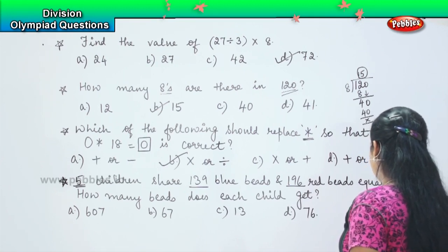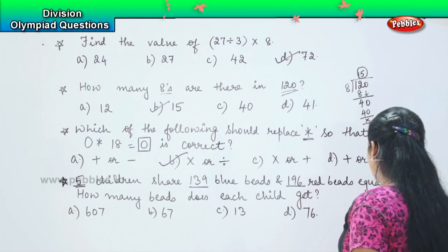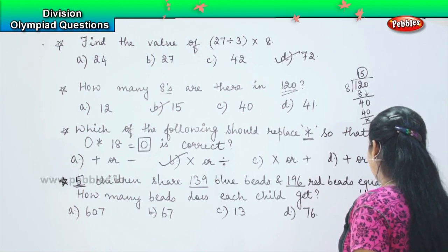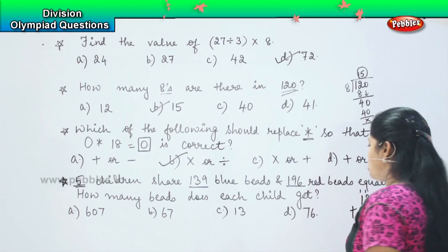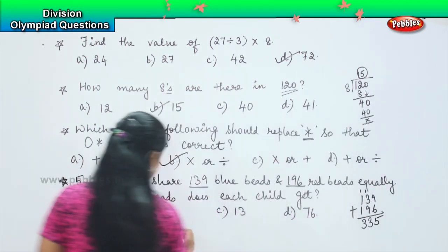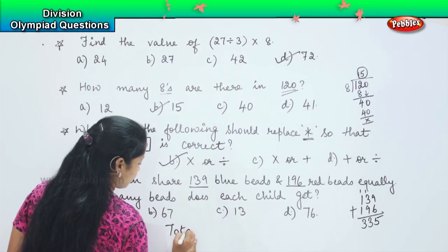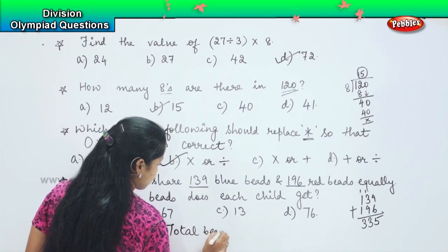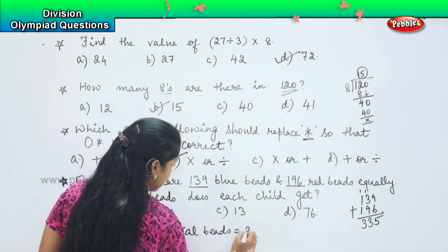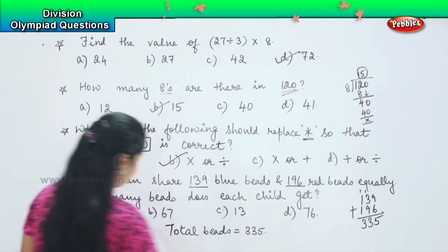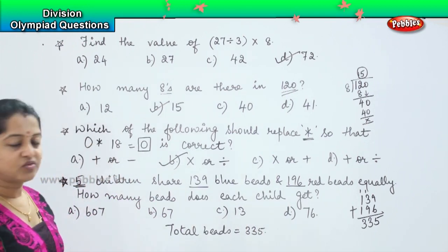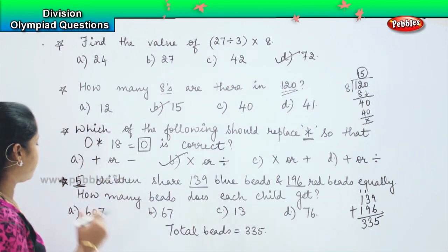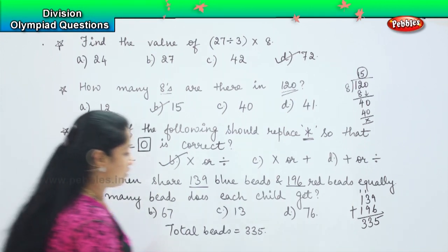So first, 139 plus 196. So 9 plus 6 is 15, 1 plus 3 is 4, 4 plus 9 is 13, which means I have the total beads as 335.